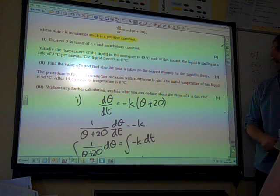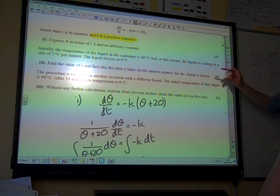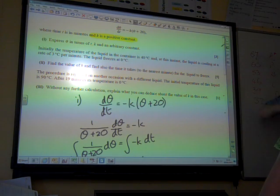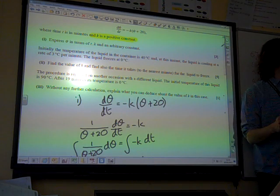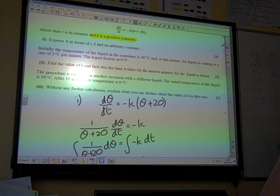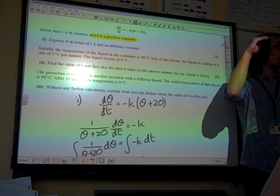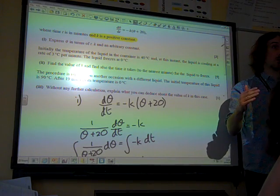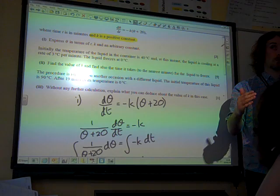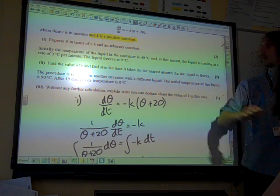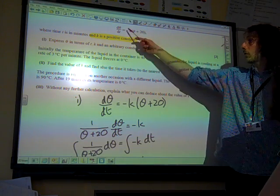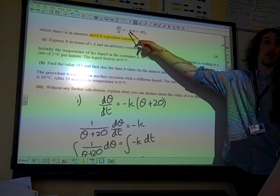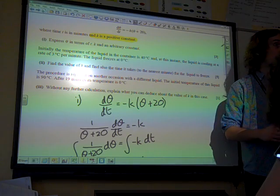That means that it got from a significantly higher temperature to zero in a much shorter time than the one that we did. Well, now, in a further calculation explain what you can deduce about the value of k in this case. So this one cools much, much more rapidly. So the rate at which it was cooling was much greater. It was cooling much, much quicker. And the only thing that changes here is that we have a different value of k.